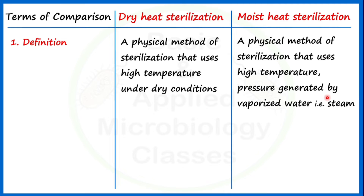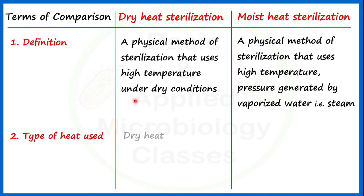The second point of difference is the type of heat used. As the name indicates, dry heat sterilization makes use of dry heat, and moist heat sterilization makes use of moist heat.